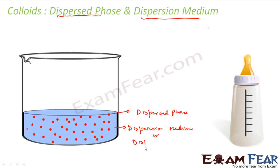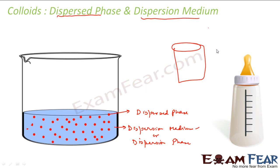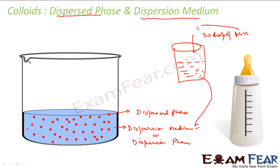The dispersion medium is sometimes also called the continuous phase. For example, in milk and water: if I have one glass of water and I add 20 drops of milk, the water becomes my dispersion medium and the milk becomes the dispersed phase.